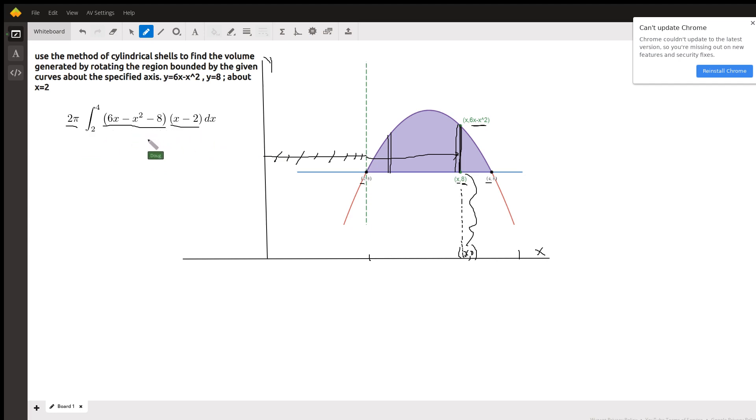Take the antiderivative of each term, evaluate from 2 to 4, multiply the result by 2π, you will have your answer.